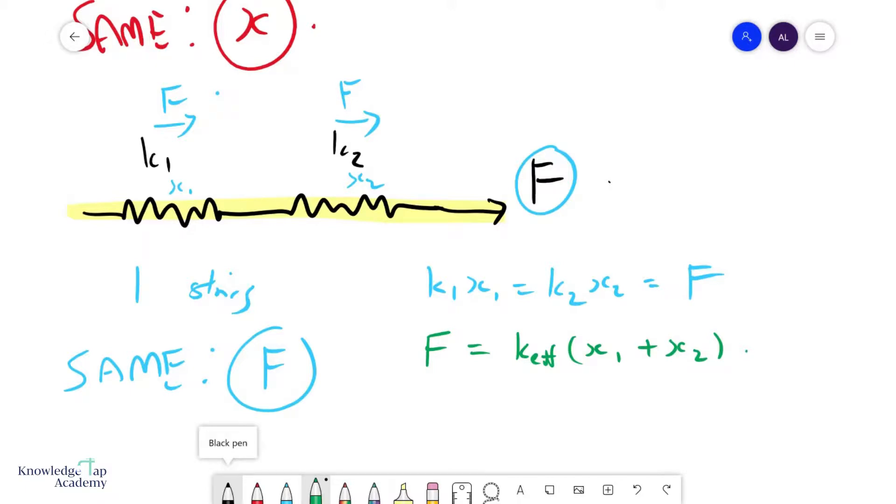Now we can do a little bit of interesting math. This is k effective. I'm trying to find an expression for k effective. I can express x1 as f over k1, and I can express x2 as f over k2.